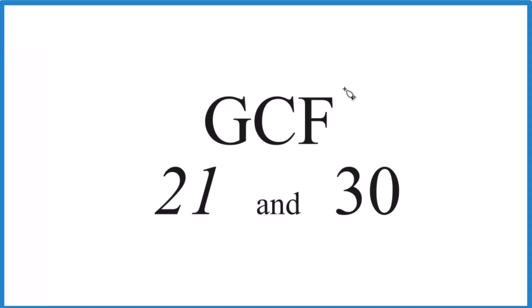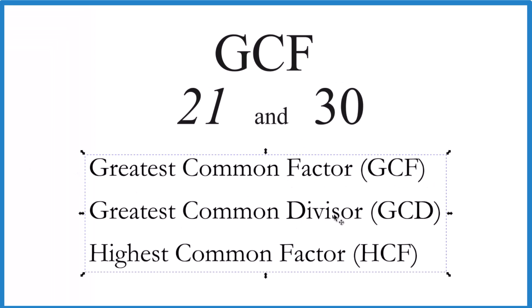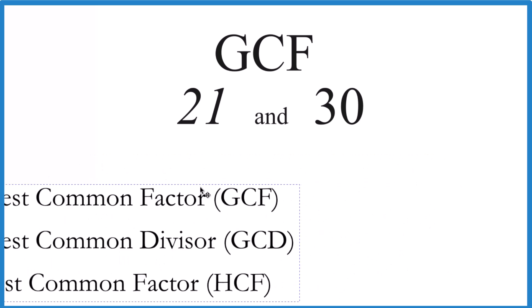Here's how you find the greatest common factor, the GCF, for 21 and 30. The GCF is sometimes called greatest common factor, greatest common divisor, or highest common factor. They're all the same thing.